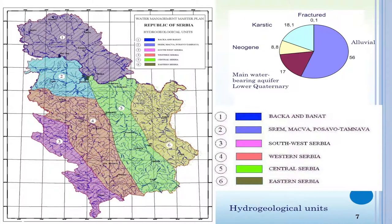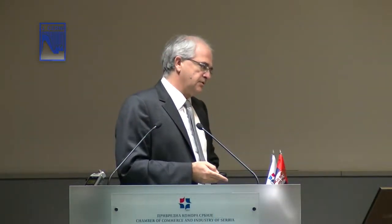This slide shows the basic hydrogeological units of Serbia. There is a diversity of structures and conditions for creation of groundwater systems. About 75% of our drinking water comes from groundwater, and more than 50% of that comes from alluvial aquifers — conditions that are good but must be improved for the protection of this valuable drinking water source.